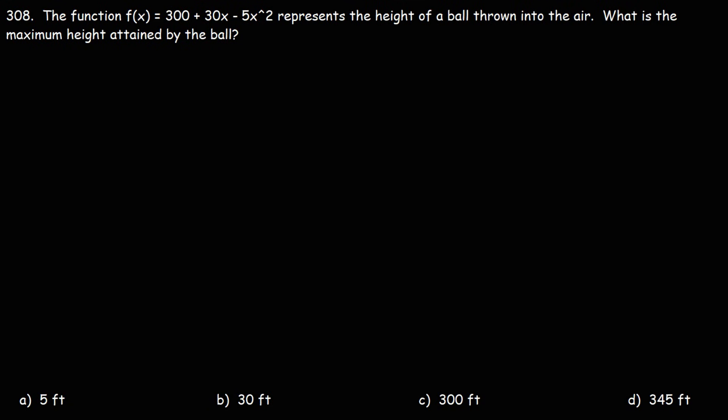Number 308, the function f of x is equal to 300 plus 30x minus 5x squared represents the height of a ball thrown into the air. What is the maximum height attained by the ball?